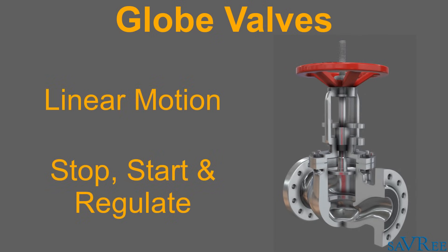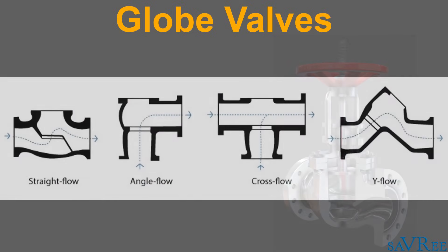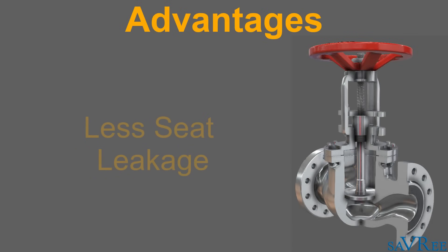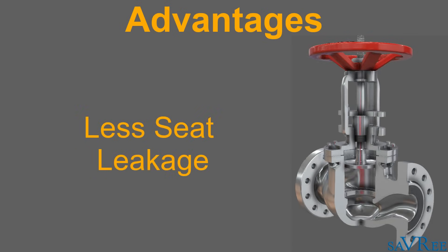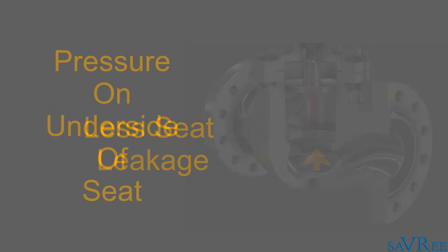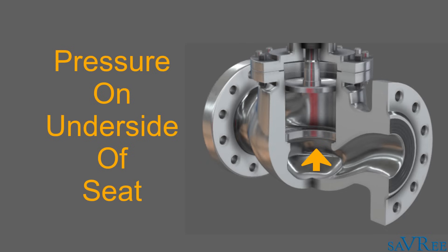A globe valve is a linear motion valve used to stop, start and regulate fluid flow. There are four main globe valve designs: straight flow, angle flow, cross flow and wide flow. Compared to a gate valve, a globe valve generally yields much less seat leakage. This is because the disc to seat ring contact is more at right angles, which permits the force of closing to tightly seat the disc. Globe valves are almost always installed with the system pressure on the underside of the valve seat, which makes it easier to open the valve and also removes the pressure on the stem, packing and bonnet when the valve is closed.